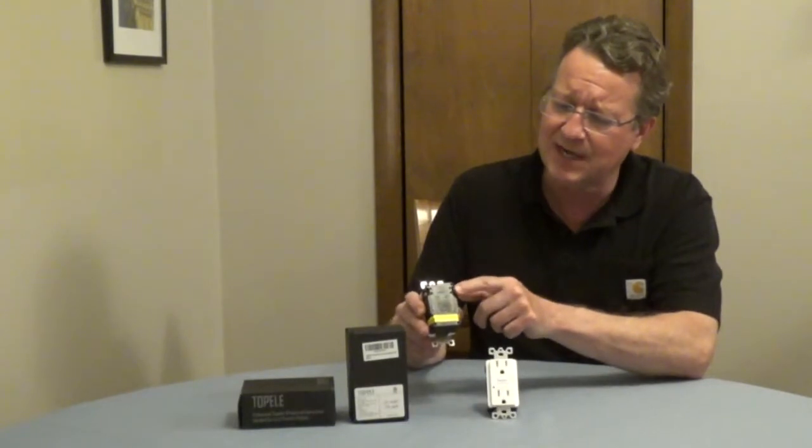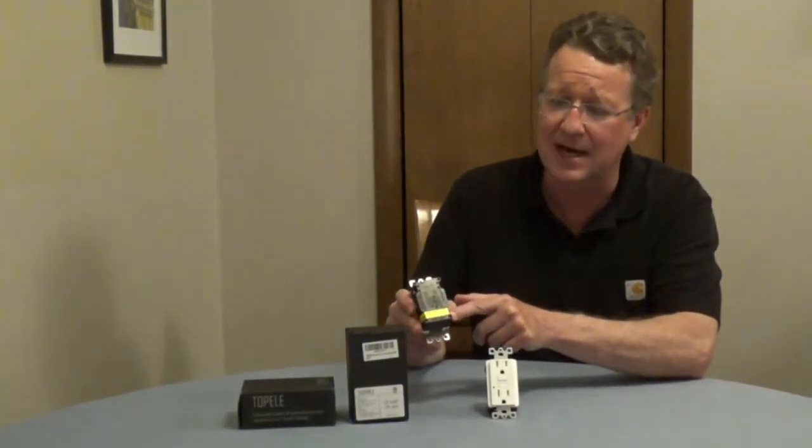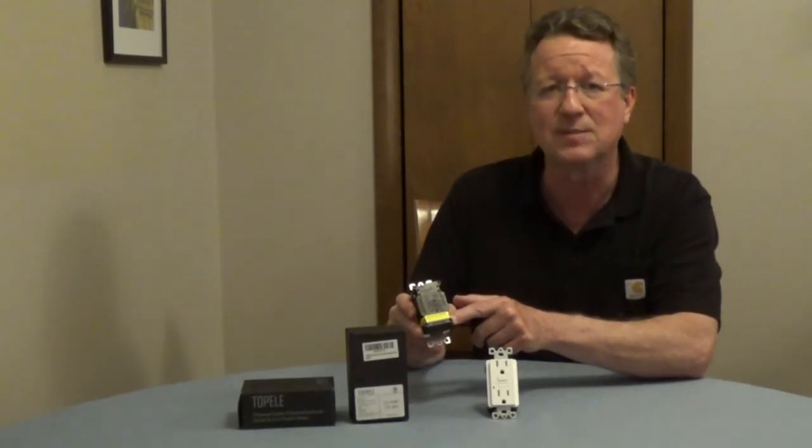So on the GFCI, you're going to have a line side with a brass and a silver screw and a load side. Generally, the load side is going to be covered with tape.